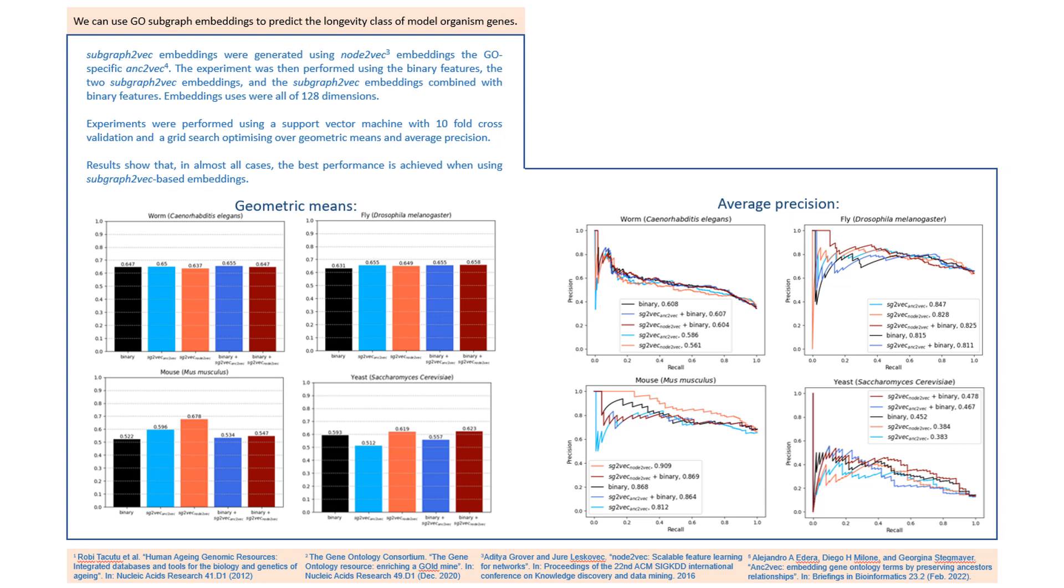In terms of geometric means, the best performing features were subgraph-based overall for model organisms, which is very promising. Notably, node-to-vec subgraph embeddings considerably outperformed other features in the mouse dataset. The average precision has a similar story, except for the worm dataset where binary features just edged it.